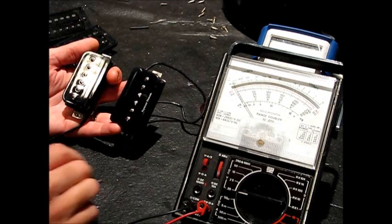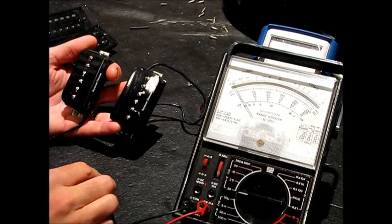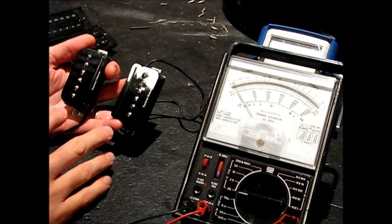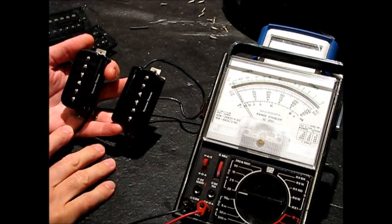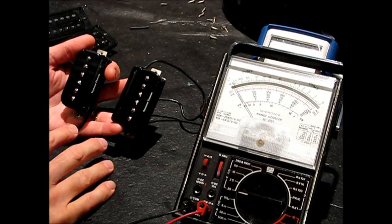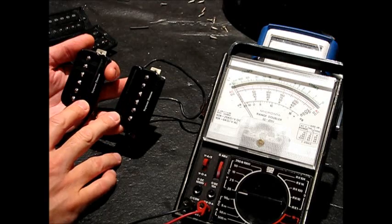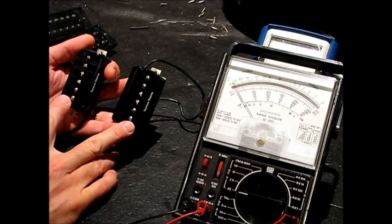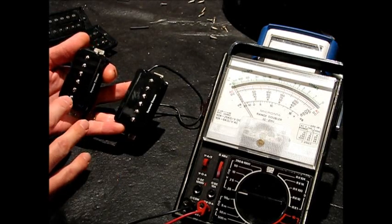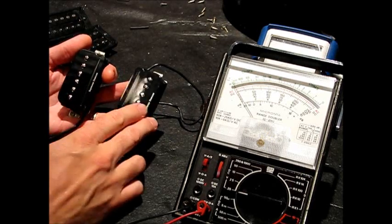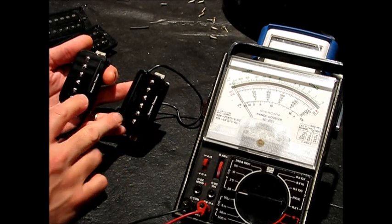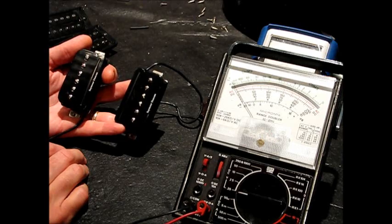So if you buy a set of these P-Rails, it's obvious that you're not going to use them only as humbuckers. You're going to have some sort of switching system so that you can select the single coil mode, so you can select the rails, the mini rails, or the P-90s. They're designed to be used with this setup. So the P-90s are on the outsides and the mini rails are on the insides to give you the Strat tones.